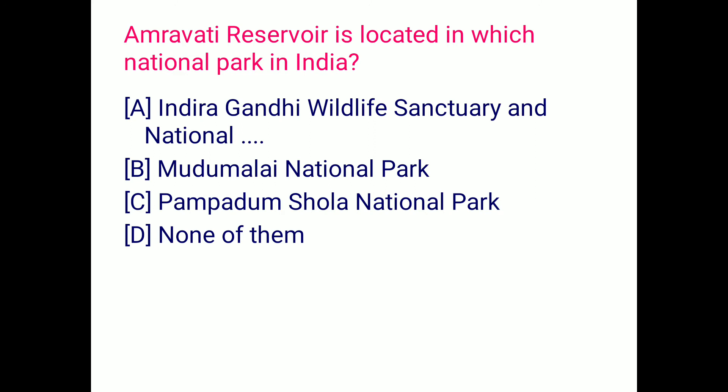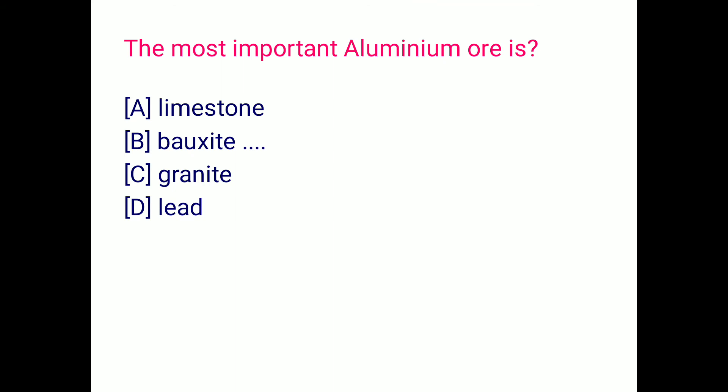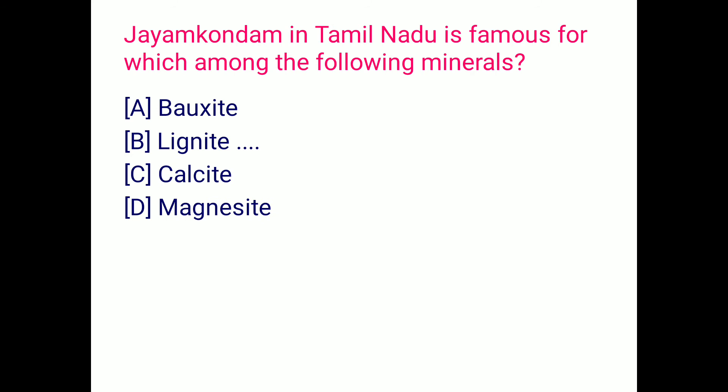Amaravati Reservoir is located in Indira Gandhi Wildlife Sanctuary and National Park, option A. The range that rises in eastern Gujarat near the Arabian Sea coast, running east through Maharashtra, Madhya Pradesh to Chhattisgarh, is the Satpura Range. The most important aluminium ore is bauxite. Jayamkondam in Tamil Nadu is famous for lignite, option B.